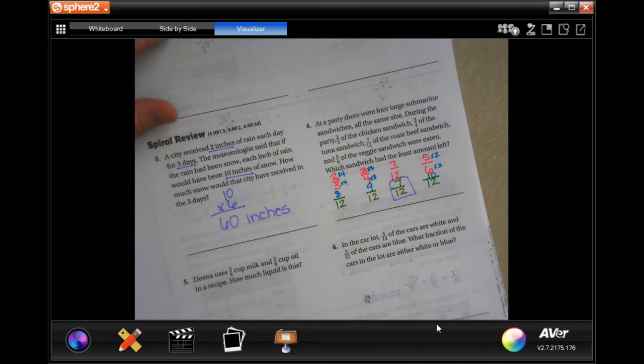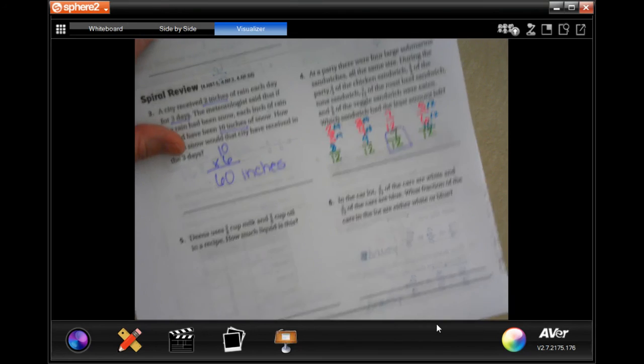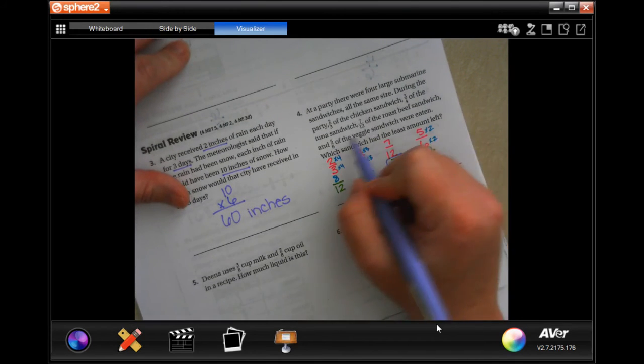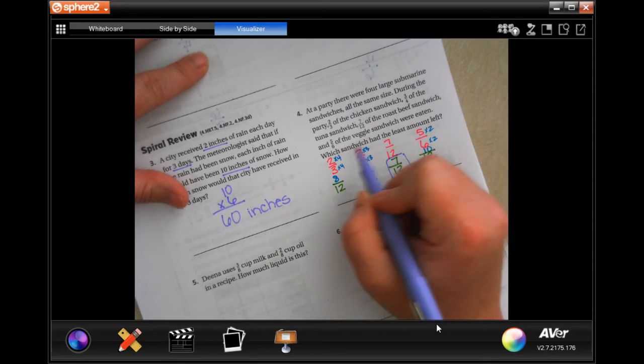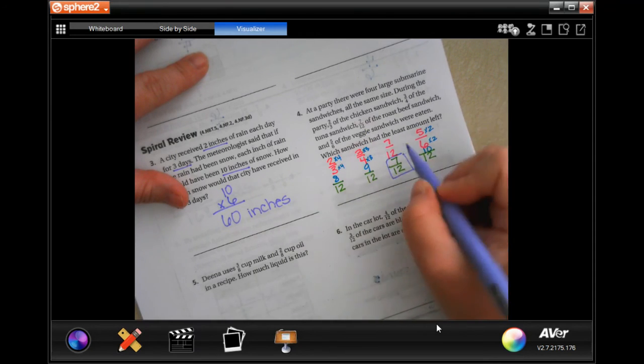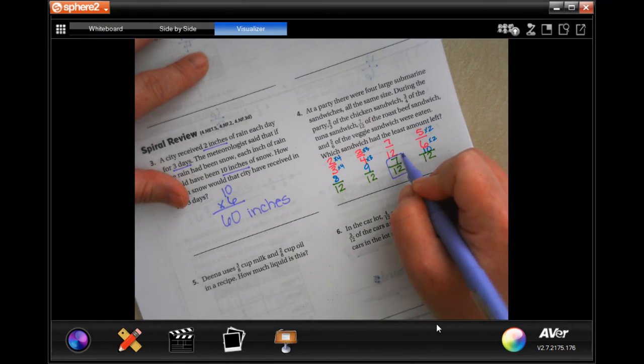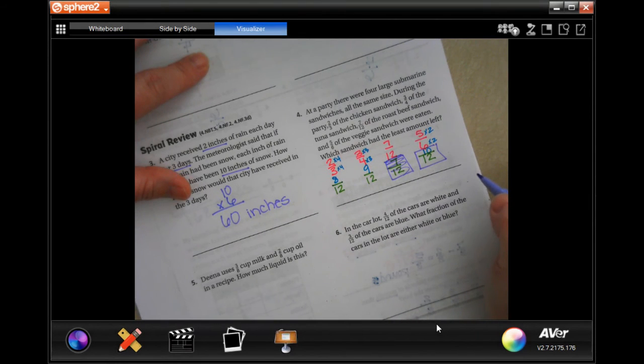There you go, all right? Which was, the 7/12 was, oh, had, sorry, had the least amount left. Goodness, so we're actually looking for the biggest number, I'm sorry. Which means, that one had the least amount left, because it only had 2 left.